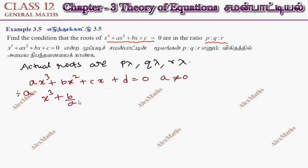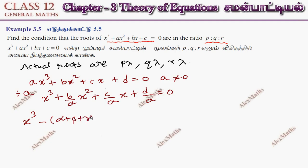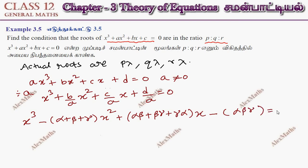Dividing by a, we get the monic equation: x³ + (b/a)x² + (c/a)x + (d/a) = 0. This can be written as x³ − (α + β + γ)x² + (αβ + βγ + γα)x − αβγ = 0. This gives us the relation between the roots and the coefficients.